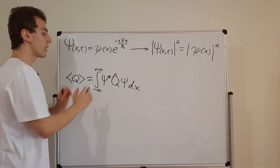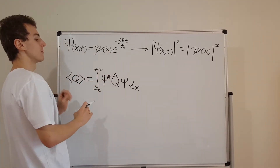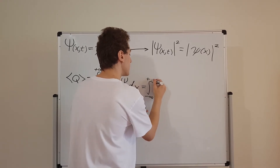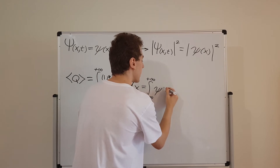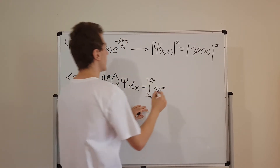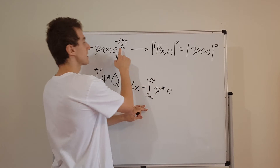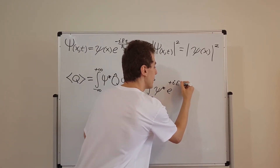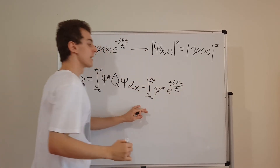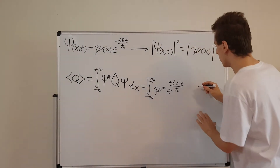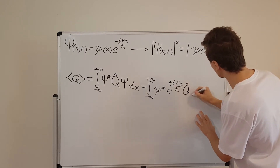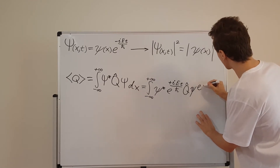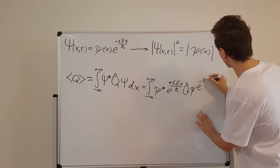Let's rewrite this using the separable form. The integral from minus infinity to plus infinity will have little psi star — we complex conjugate it first — then we complex conjugate the exponential factor. Just like in the previous video, we turn that minus i into a plus i, giving us plus i E t over h-bar. Then we have the operator q-hat in the middle, and normal psi without the complex conjugate, giving us the full expression with the exponential factor e to the minus i E t over h-bar.